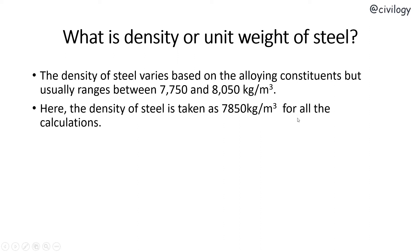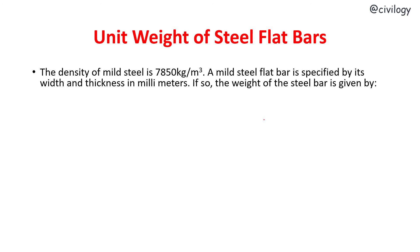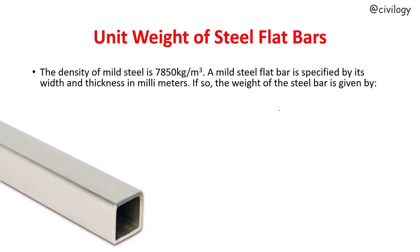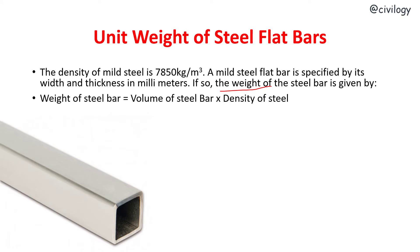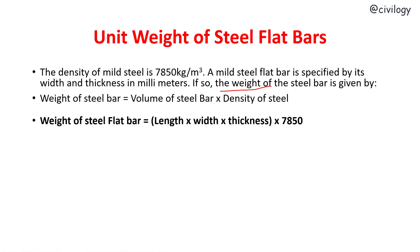Now we calculate the unit weight of steel flat bars. Flat bars have length, width, and height. The density of mild steel is 7,850 kg per meter cube. A mild steel flat bar is specified by its width and thickness in millimeters. The weight of a steel bar is given by: Weight = Volume × Density. Volume is length × width × thickness, so: Weight = Length × Width × Thickness × 7,850.